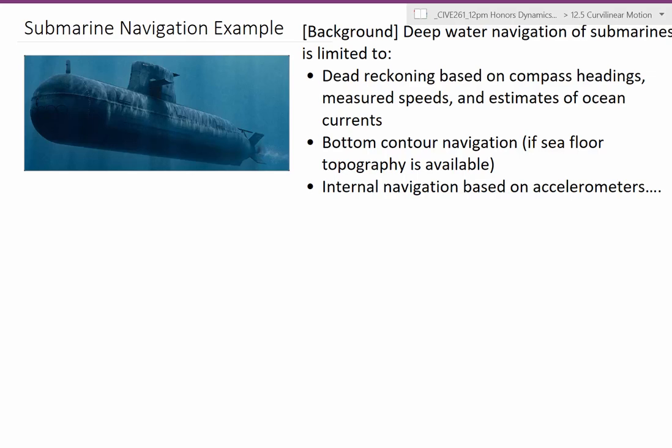Hi Dynamics students, this is Dr. Baker with a quick example. It's a two-dimensional kinematics example for Cartesian coordinates looking at submarine navigation. We talked a little bit in class that submarines can navigate in a number of different ways once they're submerged underneath the surface of the water. They can use dead reckoning, they can use bottom contour navigation, and the one we're going to focus on is this internal navigation based upon accelerometers.